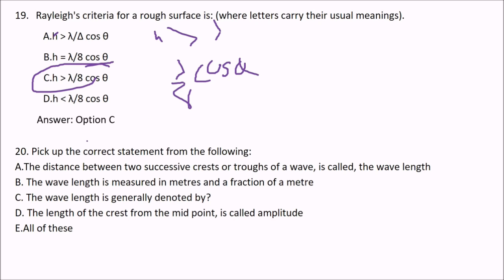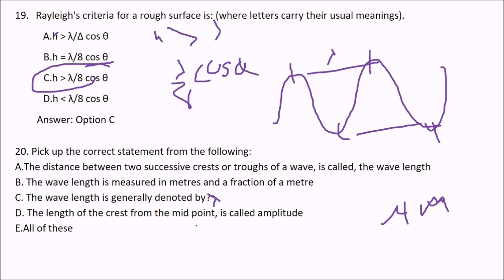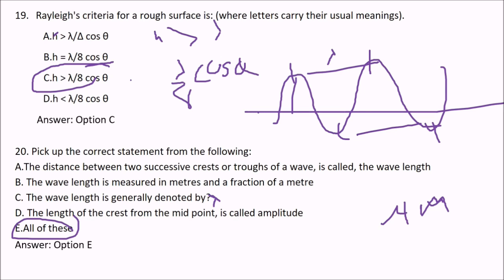Pick up the correct statement from the following. The distance between two successive crests and troughs of a wave is called the wavelength, lambda. The wavelength is measured in meters or fractions of a meter (e.g., micrometers) and is generally denoted by lambda. The length of the crest from the midpoint is called the amplitude. The answer is E — all of these are true.